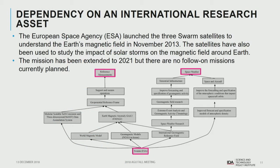Another example we looked at is how the U.S. depends on an international research asset. The European Space Agency launched three Swarm satellites to understand the Earth's magnetic field in 2013, and they've also been used to study the impact of solar storms. We found in our value tree that Swarm is used for the geopotential reference frame, and in space weather for geomagnetic field research and improved forecasting. While the mission has been extended to 2021, there are no follow-on missions currently planned — a question worth raising with decision makers.